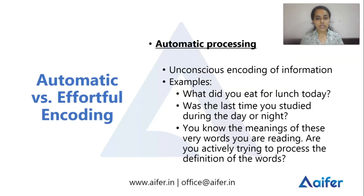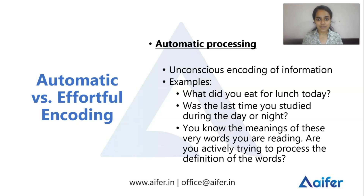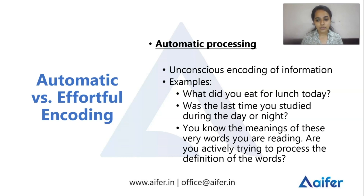There are two types of encoding: automatic encoding and effortful encoding. Automatic encoding is the unconscious encoding of information. For example, you are in a room and you automatically absorb contextual details — that information is encoded unconsciously.